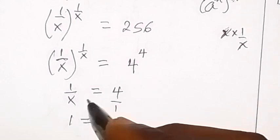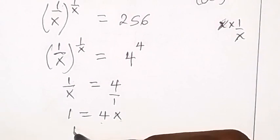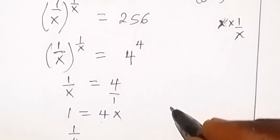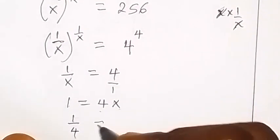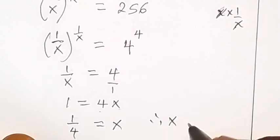1 times 1 is 1, 4 times x is 4x. And when we want to find our x, we divide both sides by this coefficient of x which is 4. Therefore, 1 over 4 will then be equal to x, so our solution here is x equals to 1 over 4.